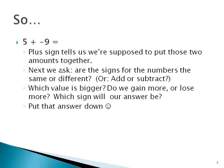So let's put that answer down. 5 plus negative 9. 9 minus 5 is 4. Our sign is negative because we lost more than we gained, so it's negative 4.